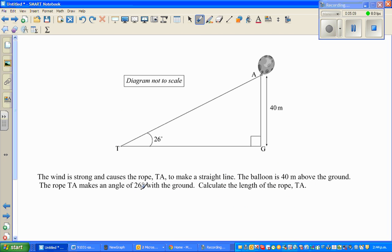Let me do one more question based on SOH-CAH-TOA. Now this is a question: The wind is strong and causes the rope TA to make a straight line. So this is the balloon and this is the rope. The balloon is 40 meters above the ground. The rope TA makes an angle of 26 with the ground. Calculate the length of rope TA.